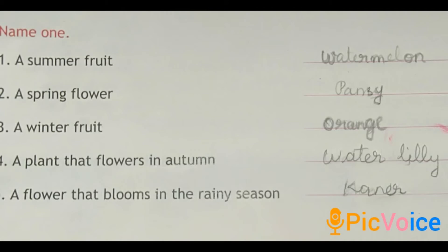Fourth one — a plant that flowers in autumn. In this season we can see more water lilies, so you can write water lily. Fifth one — a flower that blooms in the rainy season. The flowers like kaneer, rajinigandha and chamba will bloom in the rainy season. You can write any one. Here I wrote kaneer.